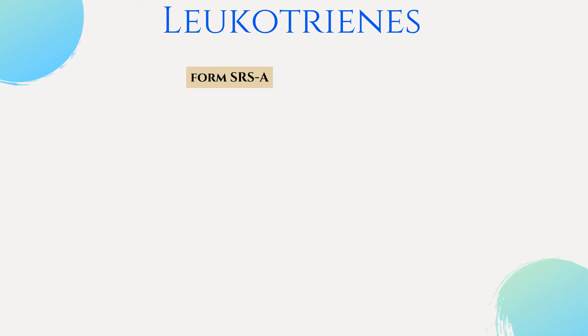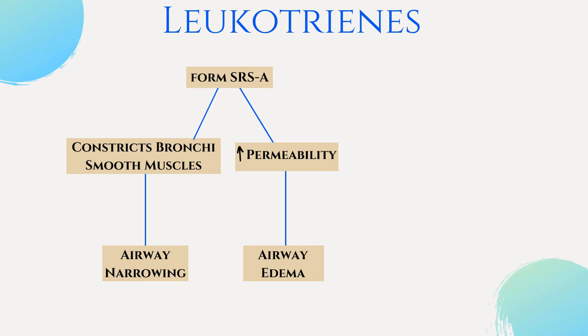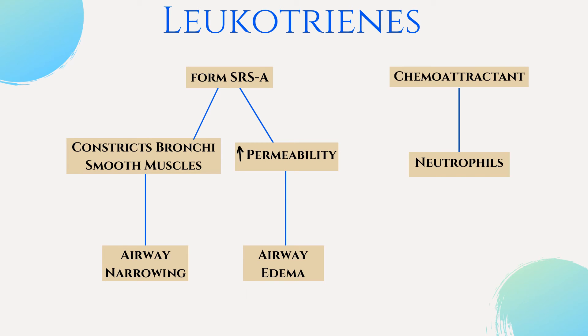The last eicosanoid group is leukotrienes. Leukotrienes form SRSA, which is short for slow-reacting substance of anaphylaxis. SRSA constricts the bronchi smooth muscles in the lungs, which leads to airway narrowing. It also increases capillary permeability, which leads to airway edema. Leukotrienes are also potent chemoattractants for neutrophils.